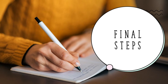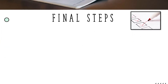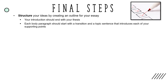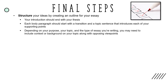After reflecting on your research, you can move on to the final steps of the writing process, which are covered in more detail in my presentation called The Writing Process. Structure your ideas by creating an outline for your essay. Your introduction should end with your thesis. Each body paragraph should start with a transition and a topic sentence that introduces each of your supporting points. Depending on your purpose, your topic, and the type of essay you're writing, you may need to include context or background on your topic along with opposing viewpoints.